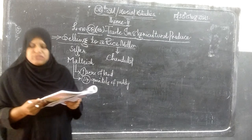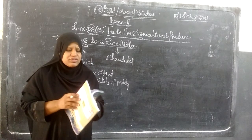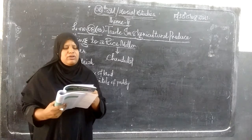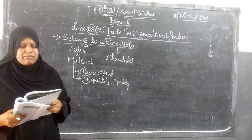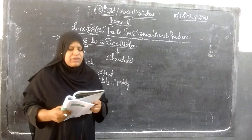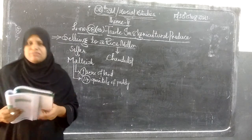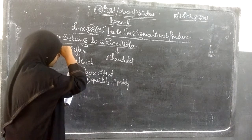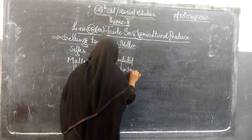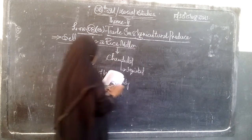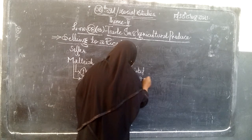Chandula priced the paddy at Rs. 950 per quintal on the basis of its dryness. This was much below Rs. 1100, the price at the agricultural market. Since Malaya needed money urgently, he asked for immediate payment. For that, Chandula reduced Rs. 1 rupee 25 paisa for every quintal. So the price became Rs. 14.25 per quintal deduction. This is a procedure followed by every rice miller and paddy trader.